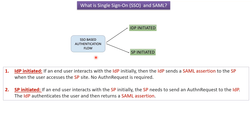In the SP initiated flow, if an end user interacts with the SP initially, then the SP needs to send an authN request to the IDP. The IDP authenticates the user, then returns the SAML assertion.